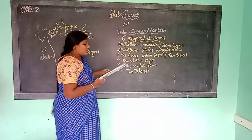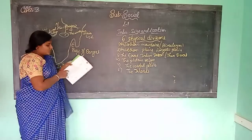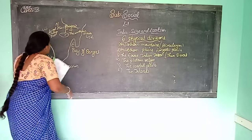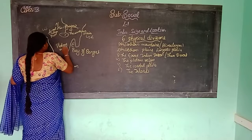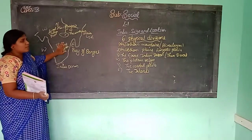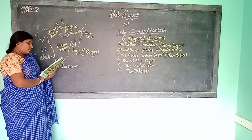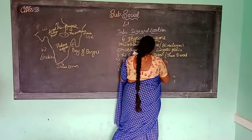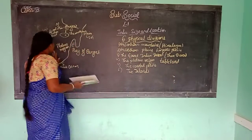The Plateau Region is situated in the southern part of India, shown in purple color on the map. The Plateau Region is also called the Deccan Plateau or the Table Land.